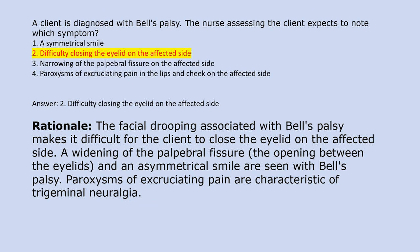Answer 2. Difficulty closing the eyelid on the affected side. Rationale: The facial drooping associated with Bell's palsy makes it difficult for the client to close the eyelid on the affected side. A widening of the palpable fissure, the opening between the eyelids, and an asymmetrical smile are also seen with Bell's palsy. Paroxysms of excruciating pain are characteristic of trigeminal neuralgia.